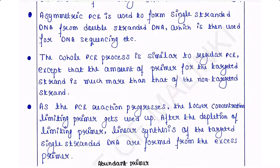Here we will use two primers as usual, but in this case we will use one primer in more amount. The concentration of one primer will be more compared to the other primer, and that will be based on which strand we need to amplify. When the PCR reaction progresses, the primer that has the lower concentration will be used up. Therefore, only the higher concentration primer will remain, and only single-stranded DNA will be formed from the excess primer.